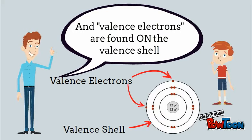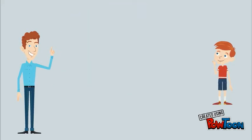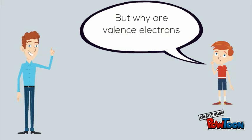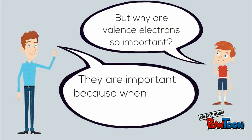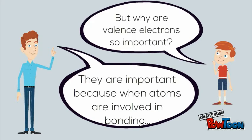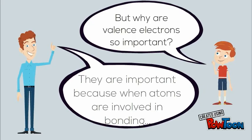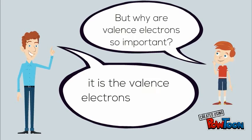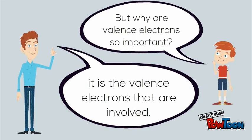So in this case here you have two valence electrons. The question is, why are valence electrons so important? Valence electrons are important because when atoms are involved in bonding, it's the valence electrons that are involved, and it's the valence electrons that determine what can be bonded with what.